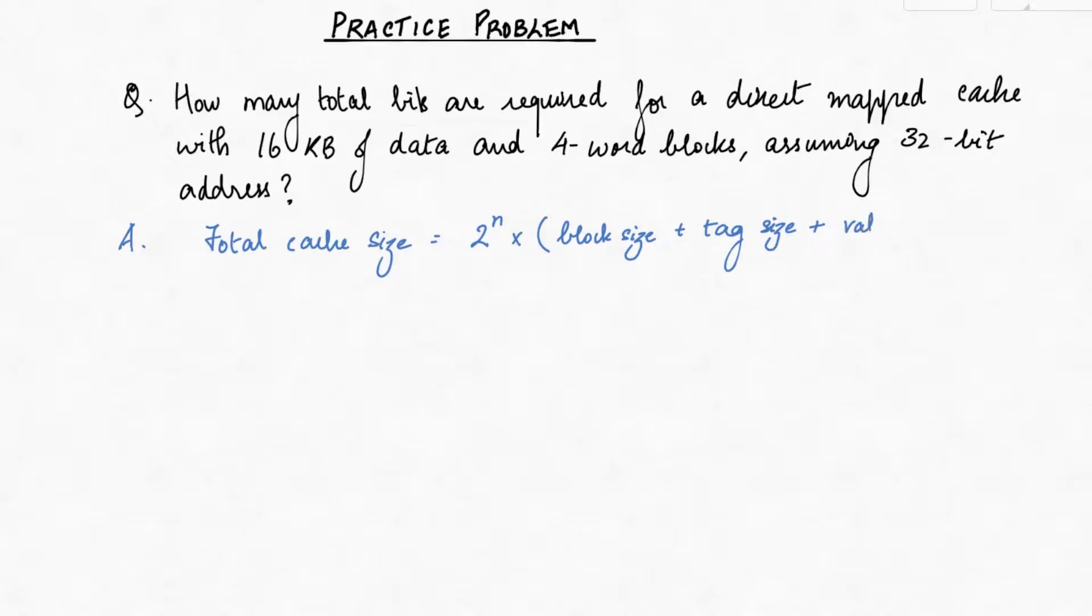We know the block size is a multiple of 2, so we set it as 2 to the power m. The question also informs us that the address is 32 bits. The block size 2 to the power m will be multiplied by 32. And the size of the tag field will be 32 minus the sum of n plus m plus 2. Finally, the size of the valid bit is 1 bit.